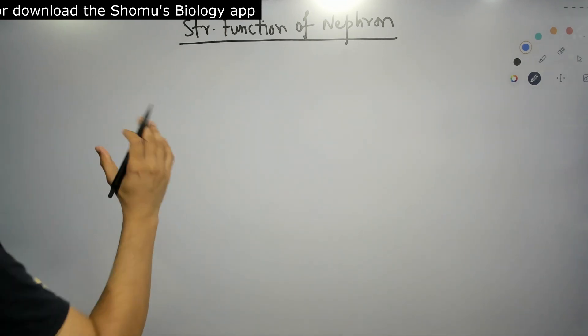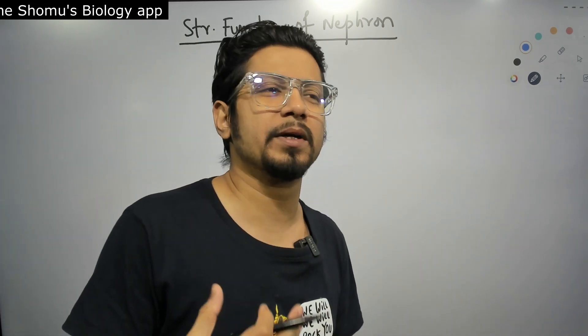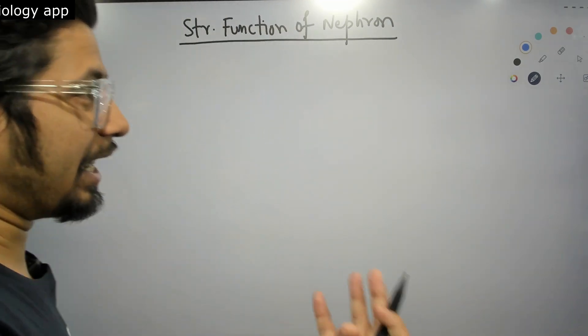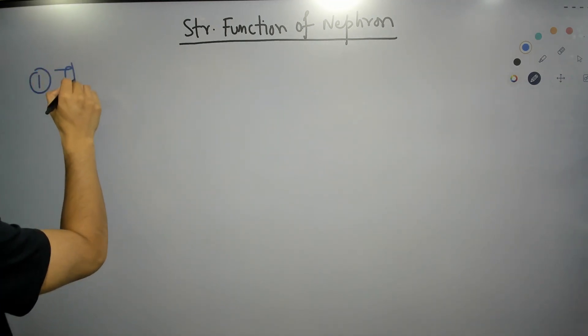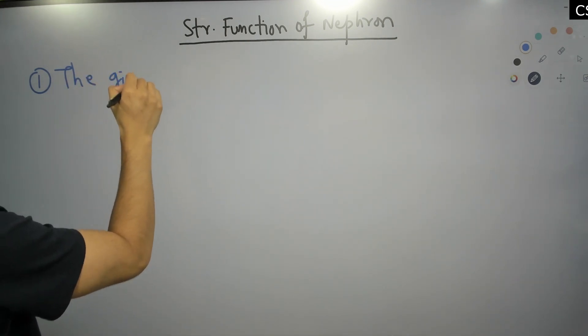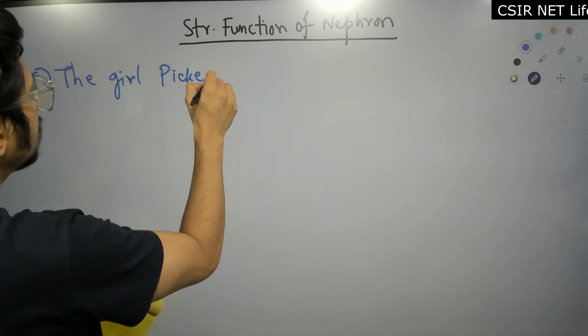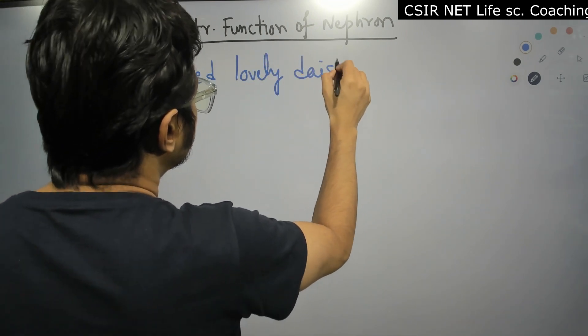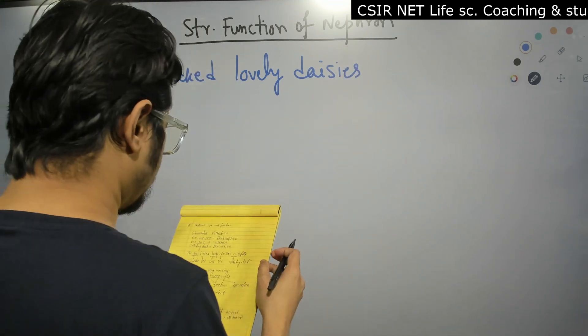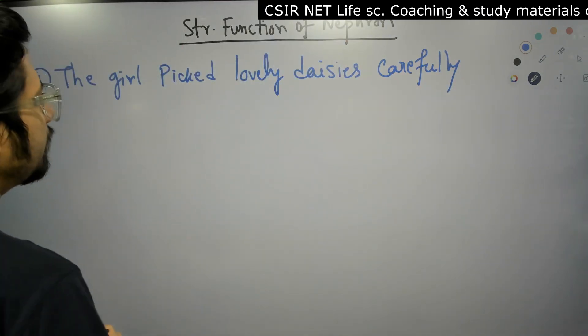I have two sentences for you. If you can remember these two sentences, it will help you understand and answer all questions related to the structure and function of nephron. This particular mnemonic is very nature friendly because we are going to talk about flowers, daisy flowers and roses.